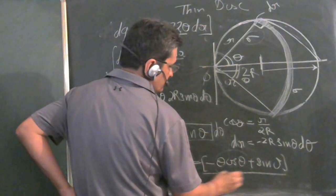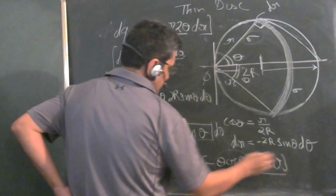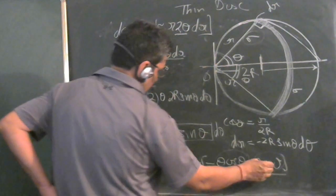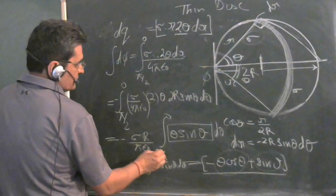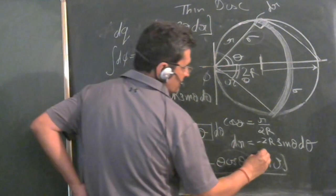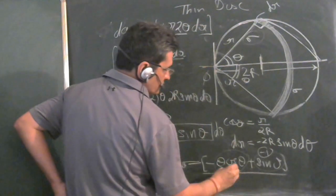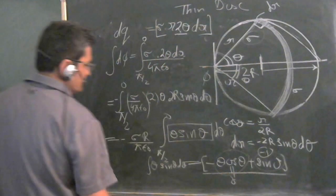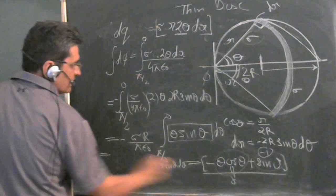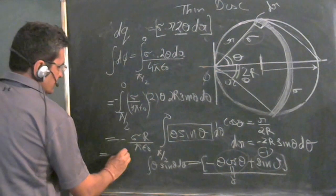Apply the limits pi by 2 to 0. This will become 0 and this will become minus. This will become 1. There is a minus sign here. Since it is pi by 2 to 0, this will become minus 1. This will become 0 when you apply the limits. So it will be minus 1. Minus sign gets cancelled.